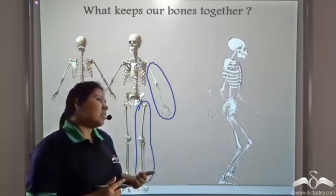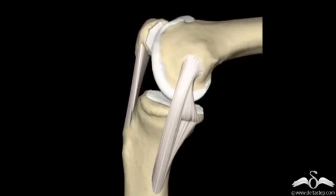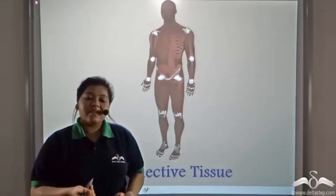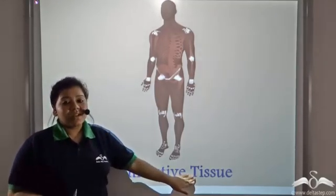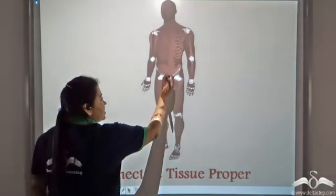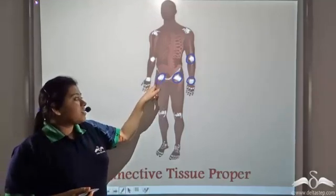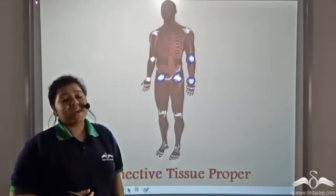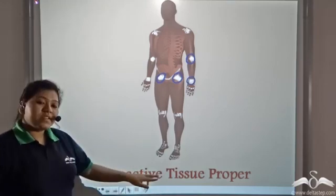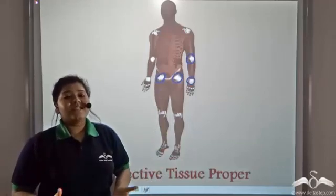Well, that is because of the presence of this tissue which is elastic and fibrous in nature, that connects the two bones together. So since this tissue connects the entire body together, it is known as the connective tissue because it connects the entire body. Now focus on these white structures. These white structures are tissues which connect two bones together. Since these tissues act like proper bridges in our body, they are known as connective tissue proper.